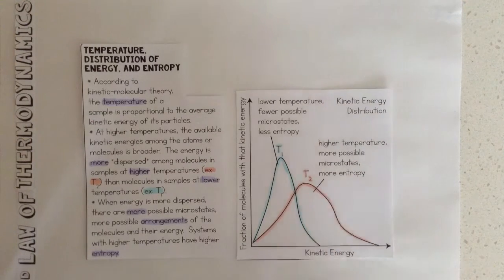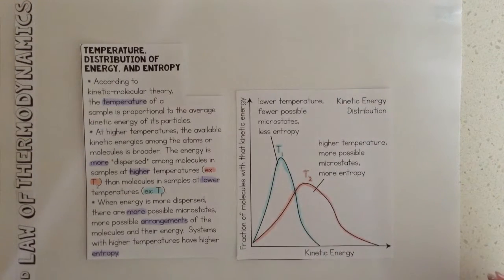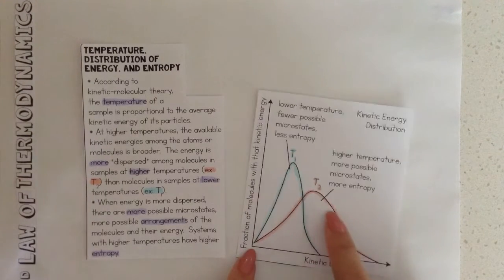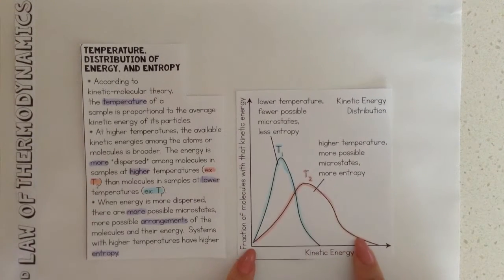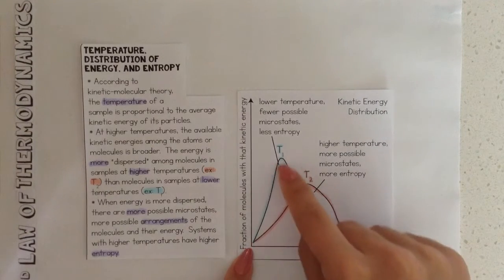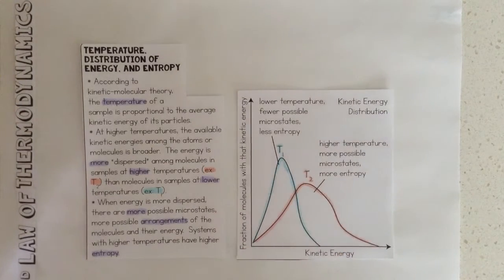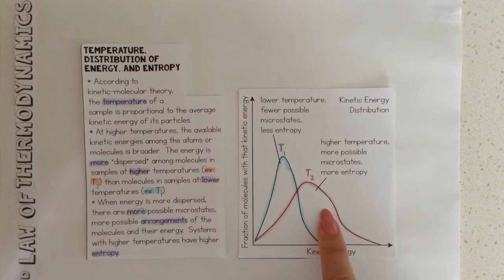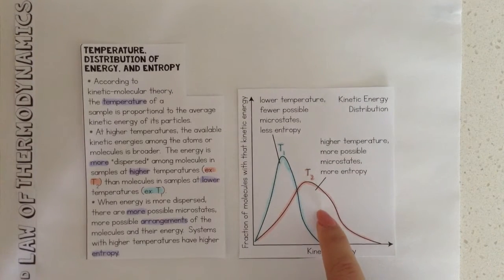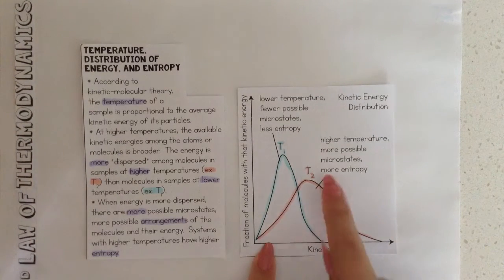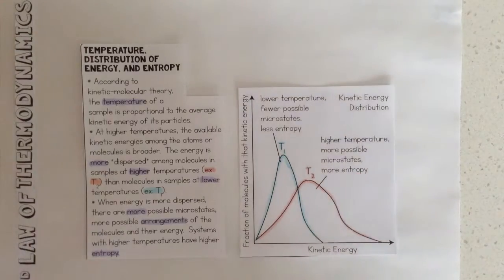The energy is more dispersed among molecules in samples at higher temperatures, like T2, than molecules in samples at lower temperatures, like T1. When energy is more dispersed, there are more possible microstates, more possible arrangements of molecules and their energies. Systems with higher temperatures have higher entropy.